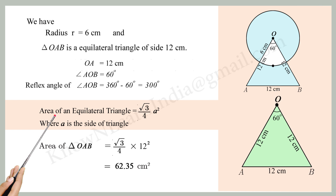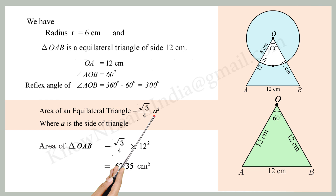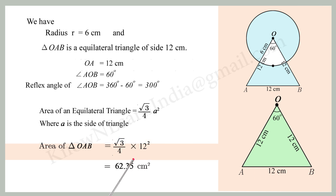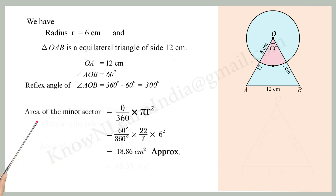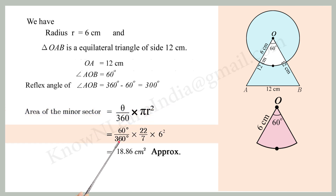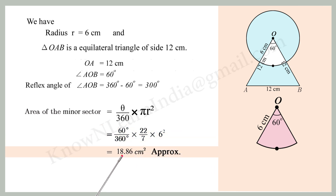We also know that the area of an equilateral triangle equals (√3/4) × a², where a is the side of the triangle. Area of triangle OAB equals (√3/4) × 12² ≈ 62.35 cm². Area of the minor sector equals (60/360) × (22/7) × 6² ≈ 18.86 cm².